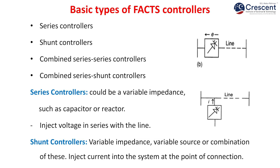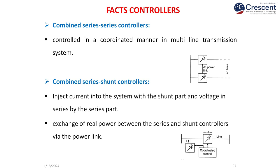Basic types of FACTS controllers: series controllers, shunt controllers, combined series-series controllers, and combined series-shunt controllers. Series controllers could be a variable impedance such as capacitor or reactor, injecting voltage in series with the line. Shunt controllers — variable impedance, a variable source, or combination — inject current to the system at the point of connection. Combined series-series controllers employ two different series controllers in two parallel lines, allowing power to be exchanged between the lines through the series controllers. Combined series-shunt controllers utilize the advantages of both: the shunt part injects current and the series part injects voltage in series. Exchange of real power between the series and shunt controllers via the power link is possible. FACTS controllers can also incorporate storage devices — series controller with storage, shunt storage device, or combined.